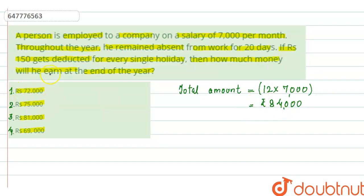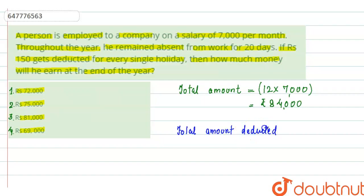Now it says that the deduction happens at Rs. 150 per day, for 20 days of absence — Rs. 150 will be deducted for each day. So the total amount to be deducted is 150 into 20, which equals Rs. 3,000.